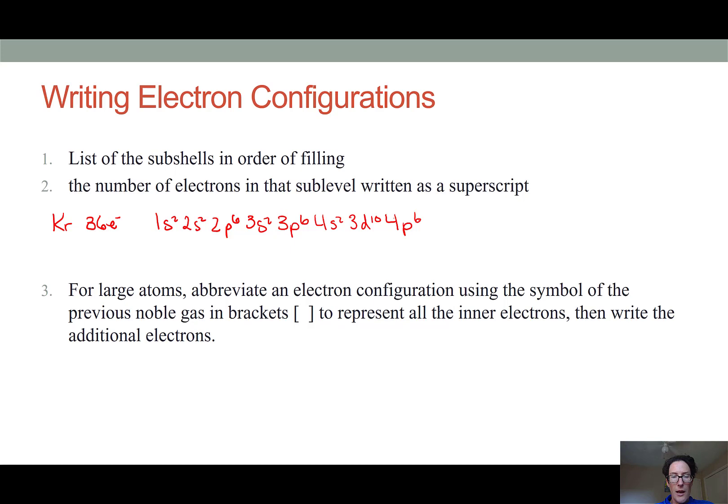Now that was a lot of work, and it turns out that we chemists can be lazy or efficient depending on how you look at it. So when we're writing out electron configurations, especially for the large atoms, we will abbreviate the electron configuration using the chemical symbol for the previous noble gas to that element. And put that noble gas in brackets to represent all of the inner electrons, so the lower energy electrons. And then we will show the configuration for the additional electrons past that. We'll talk about what's special about these additional electrons in a subsequent video.